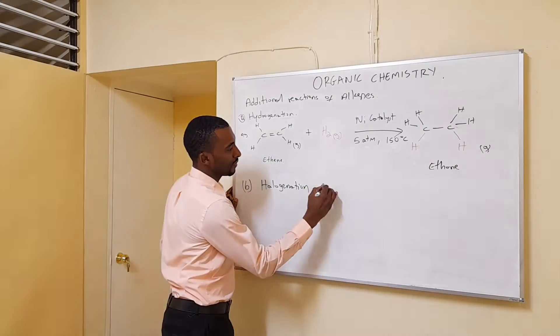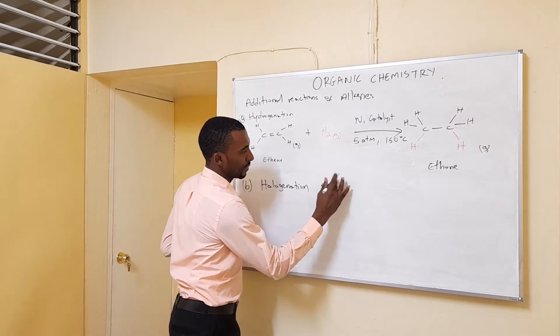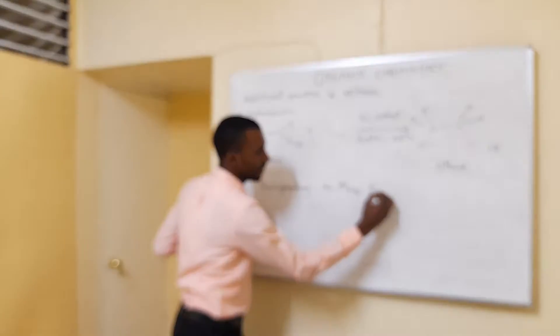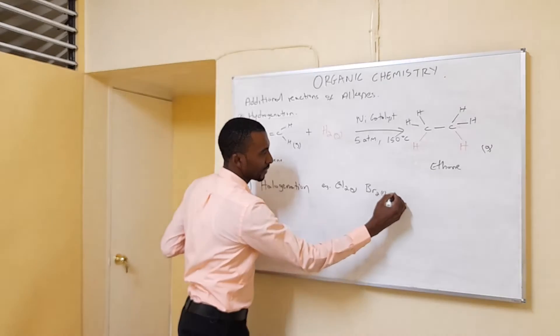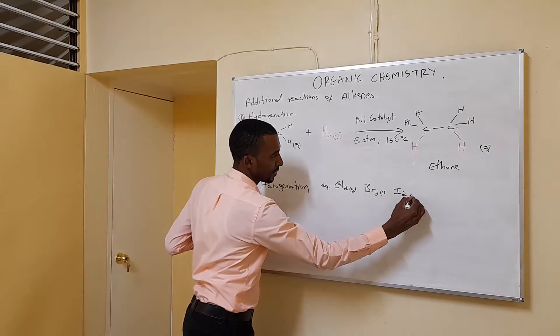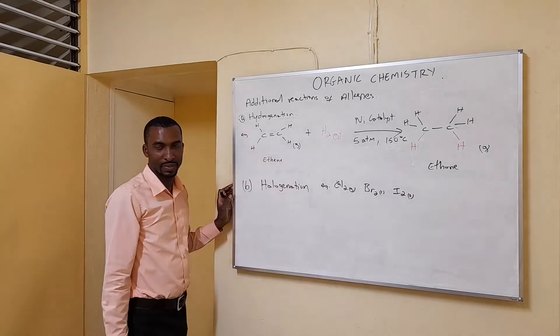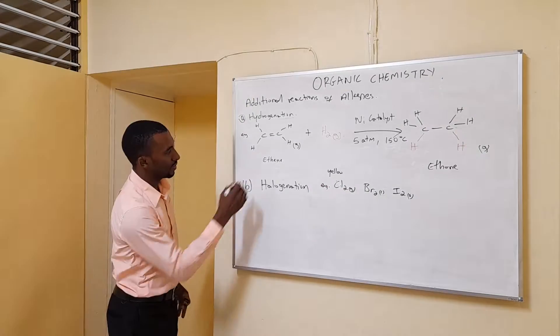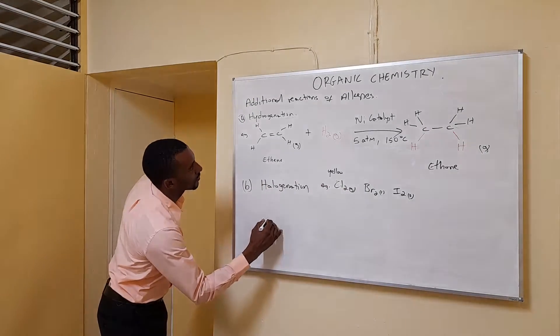Remember that examples of halogens are chlorine gas, bromine which tends to be liquid, and iodine which tends to be solid at room temperature. With ethene, let's go in general first. We'll just put it below ethene.